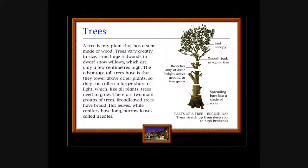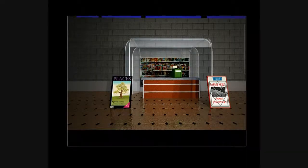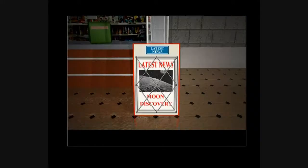Trees: Special feature are treasured trees. Trees: A tree is any plant that has a stem made of wood. Trees vary greatly in size from huge redwoods to dwarf snow willows which are only a few centimeters high. The advantage tall trees have is that they tower above other plants so they can collect a larger share of light, which like all plants, trees need to grow. There are two main groups of trees: broad-leaved trees have broad flat leaves, while conifers have long narrow leaves called needles. Leaf canopy, smooth bark at top of tree, branches stay at same height above ground as tree grows, spreading base has circle of roots. Parts of the tree: English oak trees stretch up from deep root to high branches. This tree used to be alive but we cut it up into little pieces so we could make this diagram. That's the small print you can't see, written very, very tiny. You need your microscope to see it.